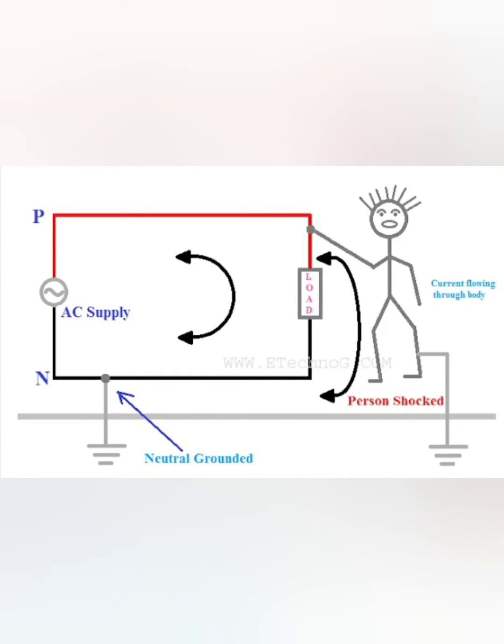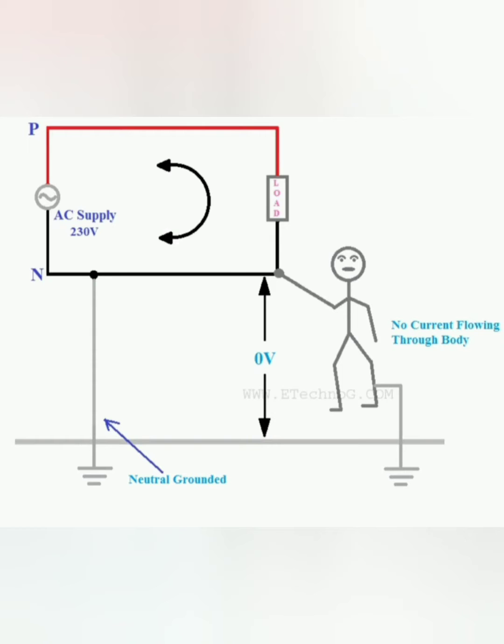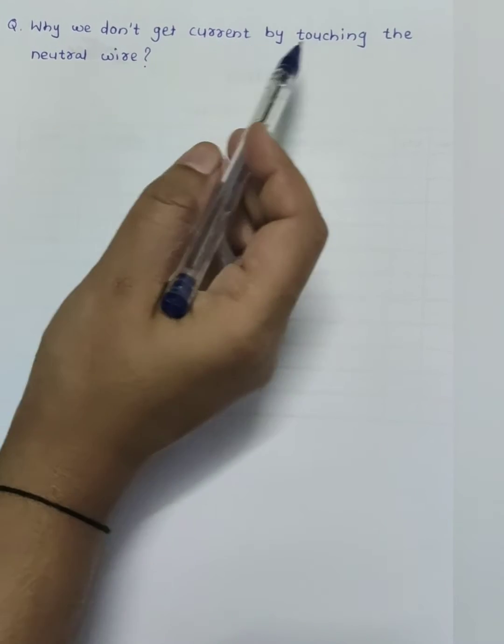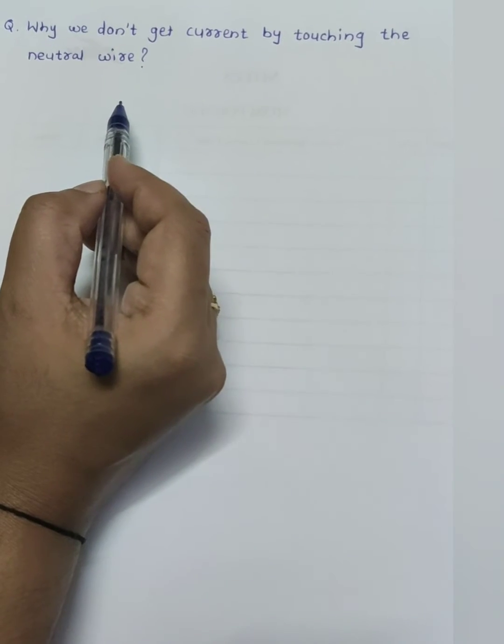Hello friends, welcome back to my channel. Today's question is why we don't get current by touching the neutral wire. This is the basic interview question for electrical and ITA students.